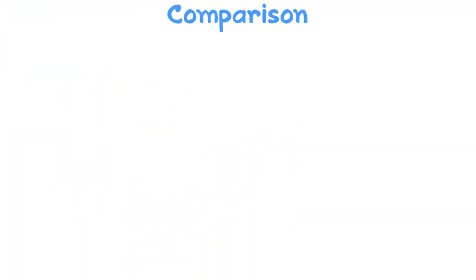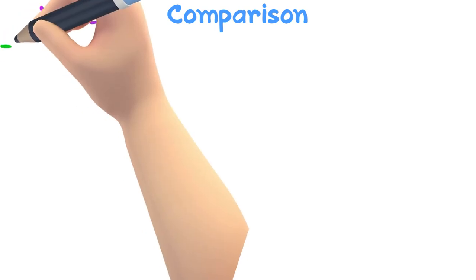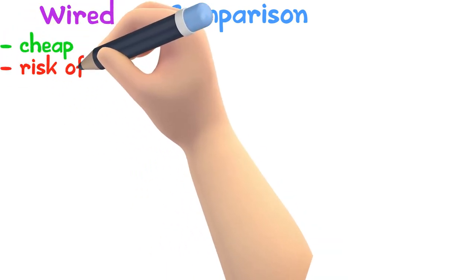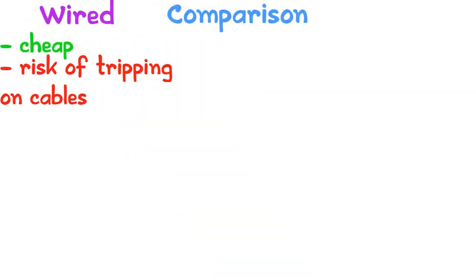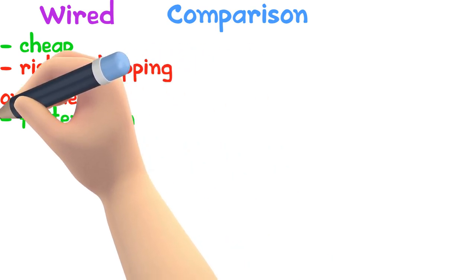Now let's compare wired and wireless connections. Wired communication uses a small number of cables, so it is cheap. There is a risk of tripping over cables. It is faster than wireless connections.